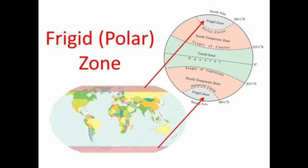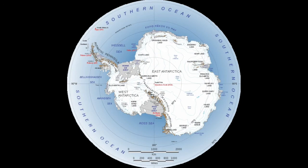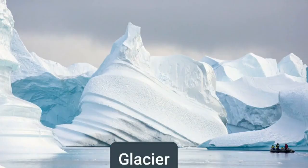There are two freezer zones, one in each hemisphere. The North Freezer Zone lies between the Arctic Circle at 66 and a half degrees north and the North Pole at 90 degrees north. The South Freezer Zone lies between the Antarctic Circle at 66 and a half degrees south and the South Pole at 90 degrees south.